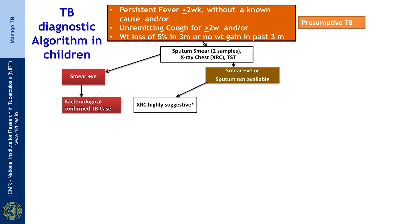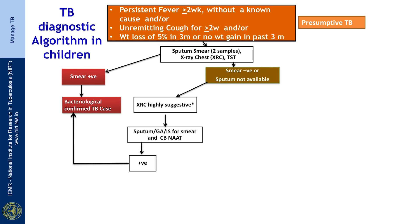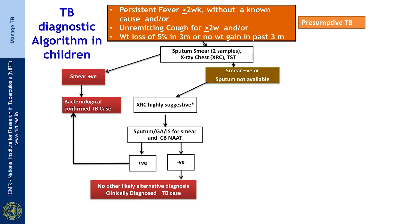When you have a highly suggestive X-ray, going back to the algorithm, you then do sputum, gastric aspirate, or induced sputum, using smear or GeneXpert (also called CB-NAAT or Xpert MTB/RIF) depending on facilities available. If you have GeneXpert available, you can do away with smear as it is much more sensitive. However, GeneXpert sensitivity is not more than 50 percent, and smear is far less. So you may have situations where the test comes negative but there is no alternative diagnosis — in this case, you may still consider this child to have TB and treat as a clinically diagnosed case.